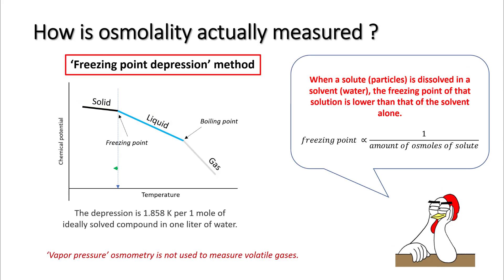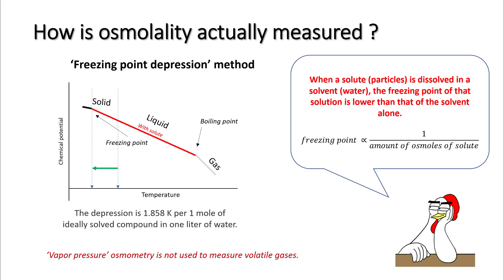Osmolality is measured by the freezing point depression method. When you dissolve a solute in water, the freezing point of water is lowered depending on the amount of osmols of solute present. By measuring the freezing point difference, you can calculate how many osmols are present.